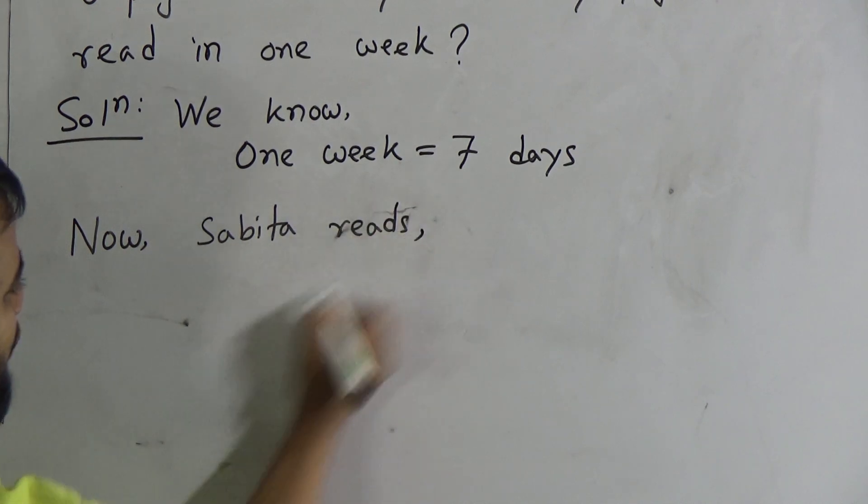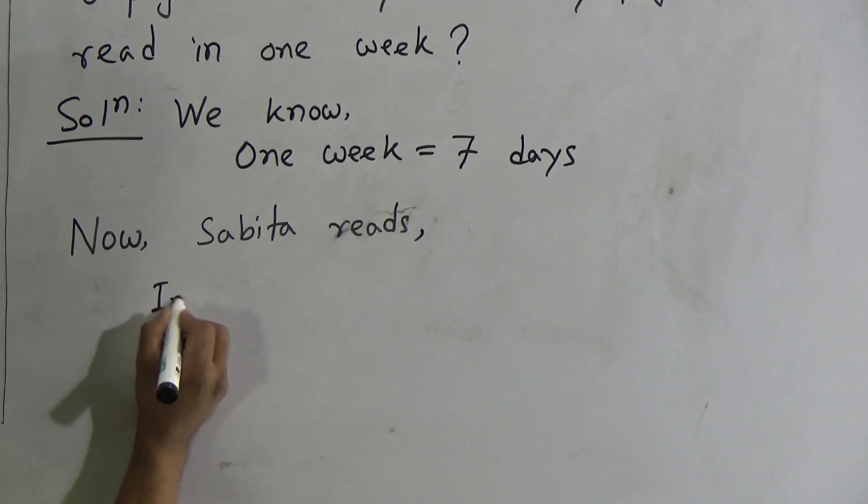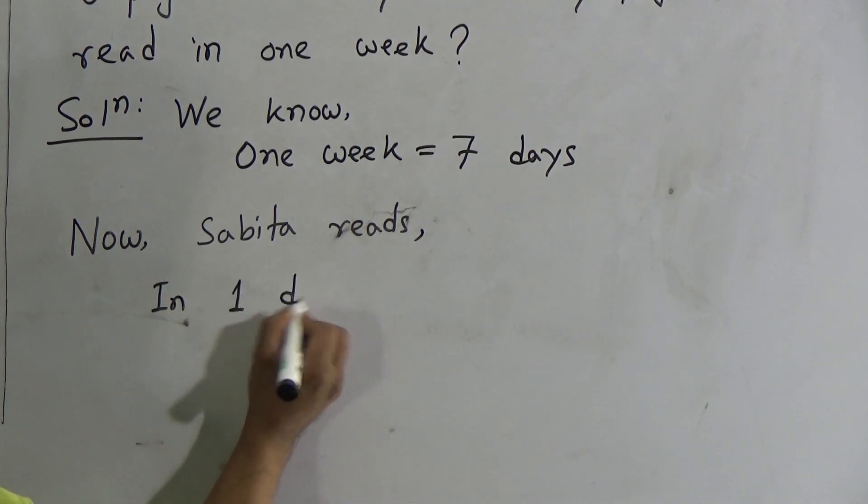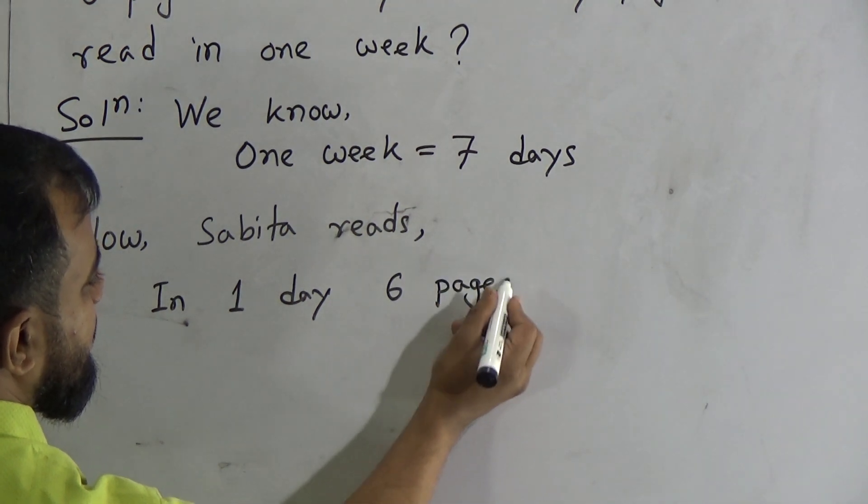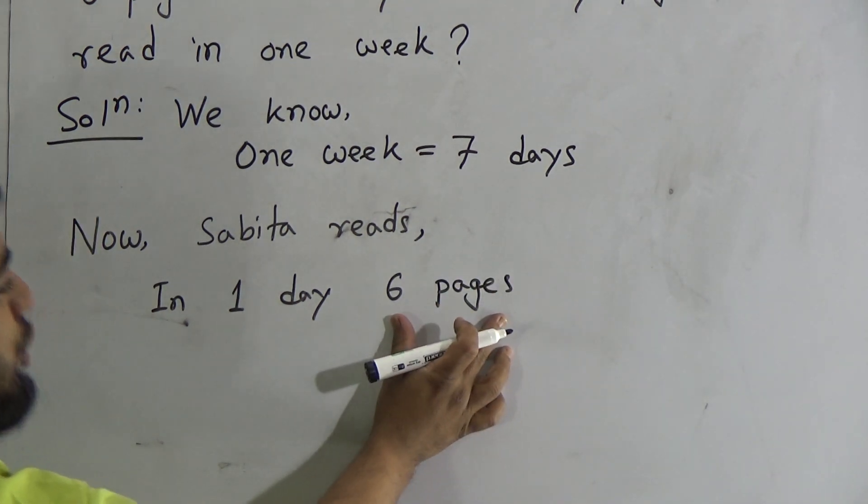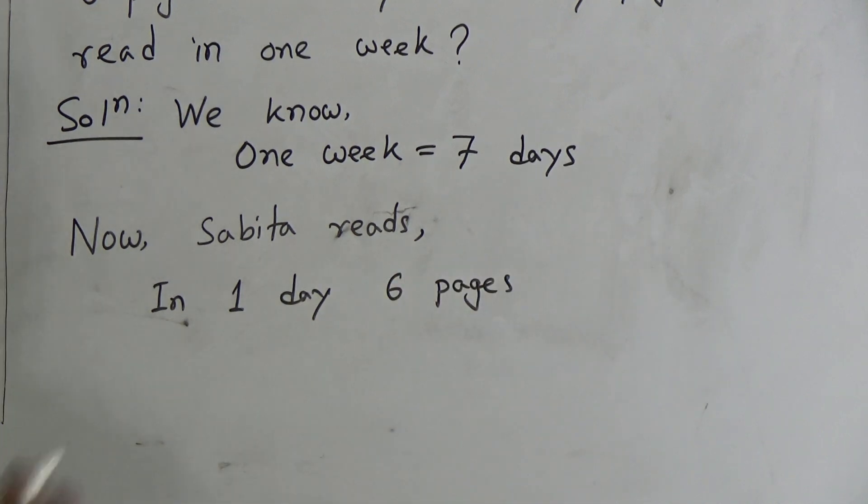Then we can use comma, Sabitha reads, in 1 day, 6 pages. Because pages is need to calculate, that's why page should be read on the right side. In 1 day, 6 pages.